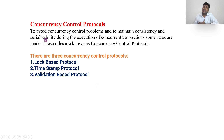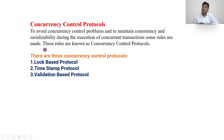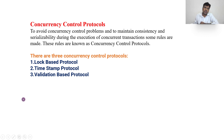Now let us see the concurrency control protocols we use to maintain consistent data. To avoid concurrency control problems and maintain consistent and serializable data during concurrent transaction execution, some rules are made — these are called concurrency control protocols. There are three: lock-based protocol, timestamp-based protocol, and validation-based protocol (also called optimistic concurrency control).